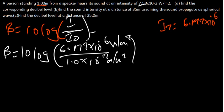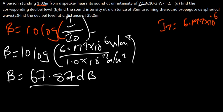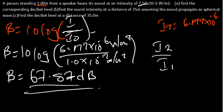So the decibel level at 35 meters is approximately 67.87 dB — this is our answer for Part C. To summarize: for spherical waves, use the intensity ratio I₂/I₁ = R₁²/R₂², and use β = 10 log(I/I₀) for decibel level. You can also rearrange the decibel formula to find intensity if given the decibel level.